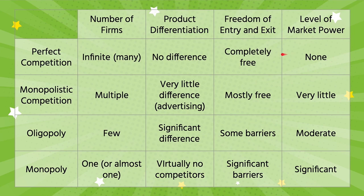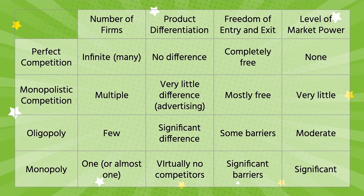If we go from the most competitive form of market structure to the least competitive, you can follow what each of these categories looks like, but just look at market power. We go from no market power of the individual firm in a perfectly competitive market to a significant or absolute amount of market power for monopolies. Please copy down this chart, and know that we will get into a lot of specific detail about these different market structures.